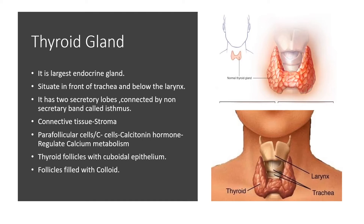Thyroid gland is the largest endocrine gland. It is situated in front of the trachea just below the larynx. The larynx is a sound box, and below that a tracheal tube is present through which air enters into the lungs. In the anterior most part of the trachea thyroid gland is present. Thyroid gland has two lobes — the right and the left lobe present on either side of trachea. Both the lobes are connected by a non-secretory band called the isthmus. Non-secretory means the secretion is not coming from this region of the thyroid gland.